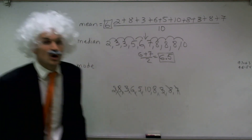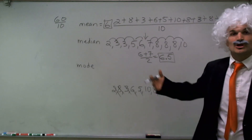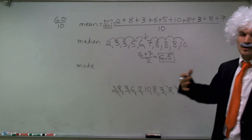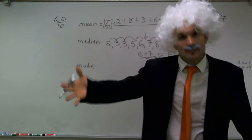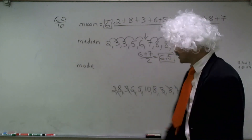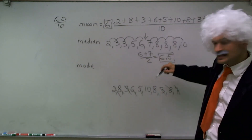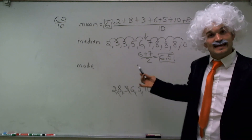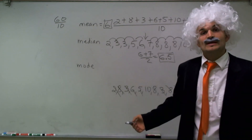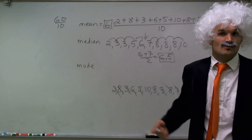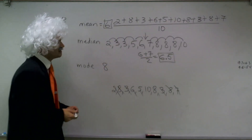The last one is going to be the mode. Mode means you're going to pick the number that occurs the most often. So we look at this and we see, well, 3 occurred twice, but 8 is the winner because it occurred 1, 2, 3 times. So the mode for this is going to be 8.